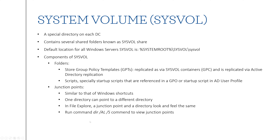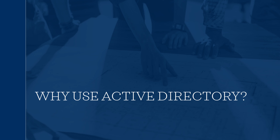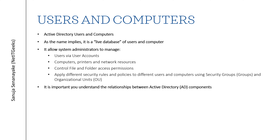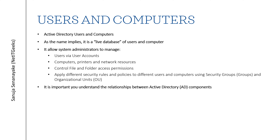You can view all the junction points even on a desktop computer not connected to a domain controller by going into the command prompt and typing the 'dir /al /s' command, which will show all junction points available on your device. So why use Active Directory in the first place? Active Directory basically has users and computers — users contain all the people using your network, and computers encompass all devices connected to your domain, including servers, printers, and any other network-connected devices.